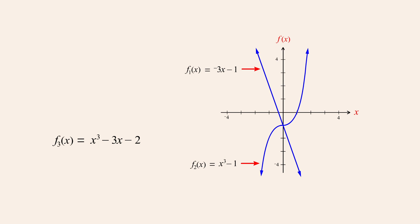For instance, when x is negative one, the values of the functions are positive two and negative two. Therefore, for that x-value, the sum of these two functions is zero.